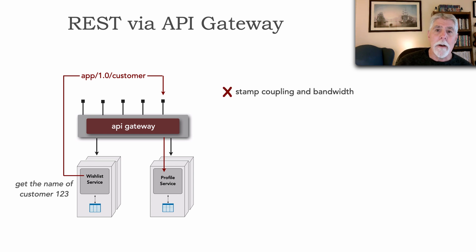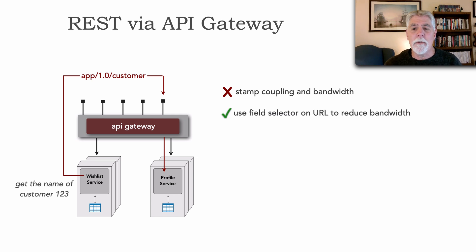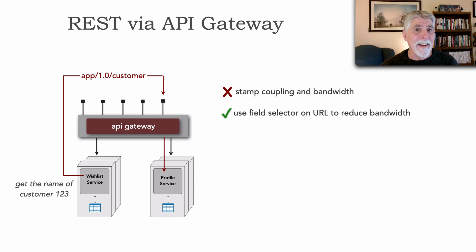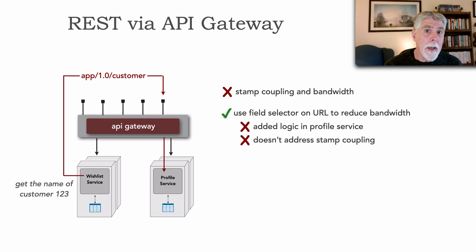And we see our first problem — stamp coupling and bandwidth issues as described in lesson 105. The wish list only needs the name, but when invoking that API call we receive all of the data — a lot of bandwidth utilization — and we're bound to that specific contract. One way to mitigate this is to use a field selector on the URL, for example a GET on /api/v1.0/customer?field=name. This does reduce bandwidth, but it's the same contract and requires additional logic in the profile service to filter fields. It addresses bandwidth but not stamp coupling.